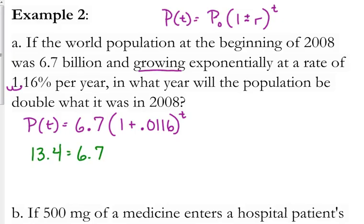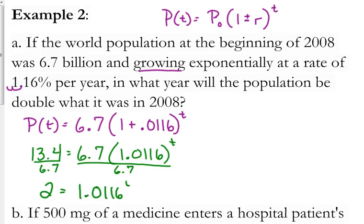1 plus any number is 1.0116. I'm just going to add those two numbers together there. Let's solve our exponential equation. Divide both sides by 6.7, that's going to give us two. That's how we came up with 13.4. So, two is equal to 1.0116 to the t.